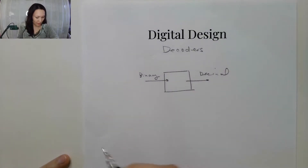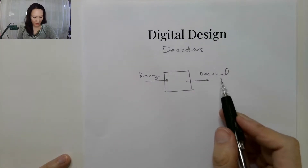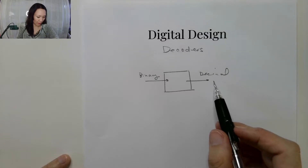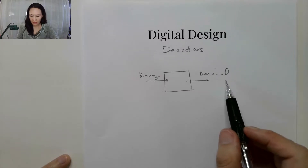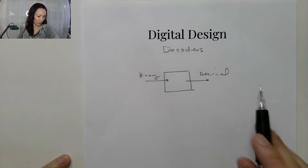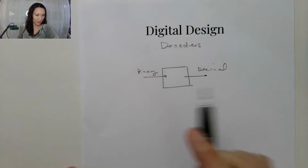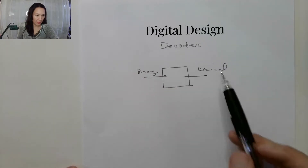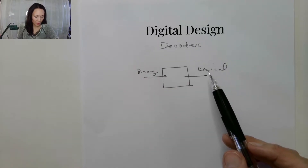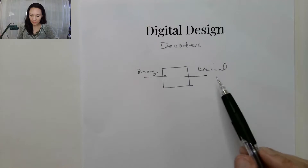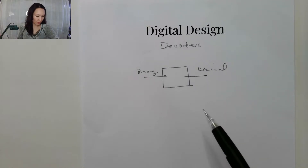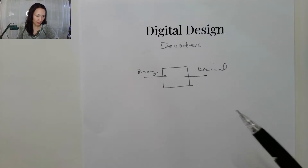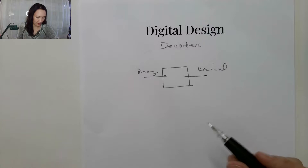Since we don't really have a good way to output a decimal number — like a numeral 5 or something like that — with zeros and ones, if we don't want to output in binary but we want it to be in decimal, what we have to do is have a large number of output bits and basically use them to count up to the highest decimal number.